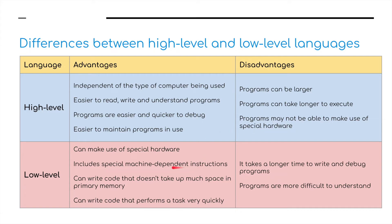Low-level languages are obviously the complete opposite. They can make use of special hardware, they include special machine-dependent instructions — we're talking assembly languages here. They can write code that doesn't take up much space in primary memory, and code that performs a task very quickly. Obviously, it takes a longer time to write and debug programs, and programs are more difficult to understand.